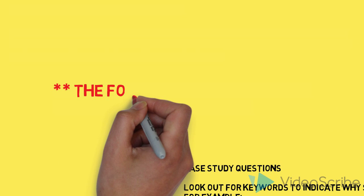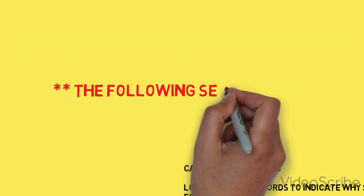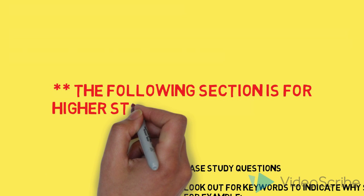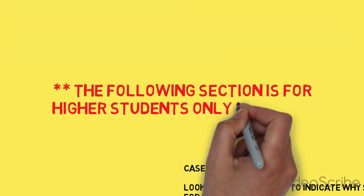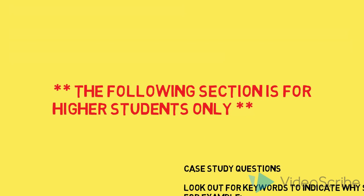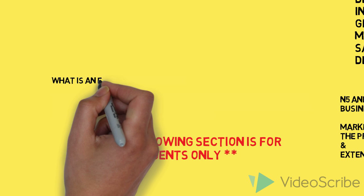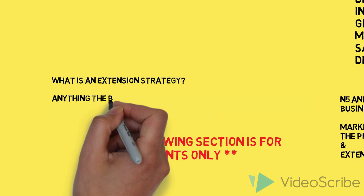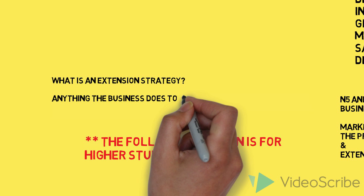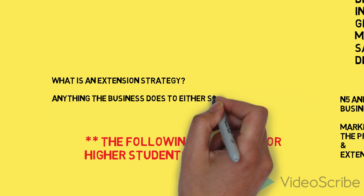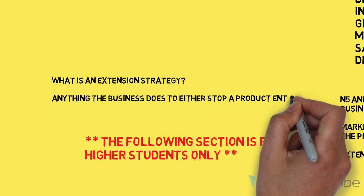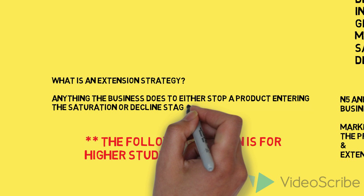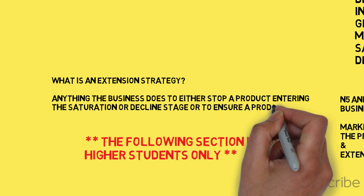The next section is for Higher students only, so National 5 students can finish listening now, or you may wish to continue for some more challenging material useful at Higher. At Higher, we may be asked to go further than just the product life cycle and suggest extension strategies — anything a business would do to stop a product entering the Saturation or Decline stage, or simply what they could do to remain in the Growth stage.